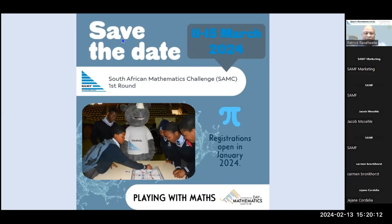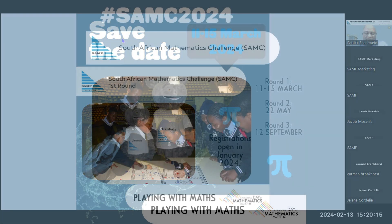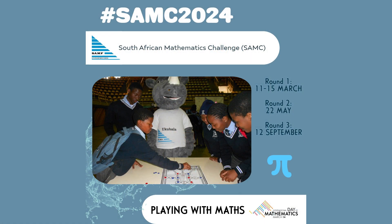The competition comprises three levels or three rounds. Round one will take place from the 11th to the 15th of March. Learners will be writing at their own schools, and some learners will be writing online — that is what I'm going to be explaining today. After round one, those who have obtained 50% and above will qualify to continue to round two.